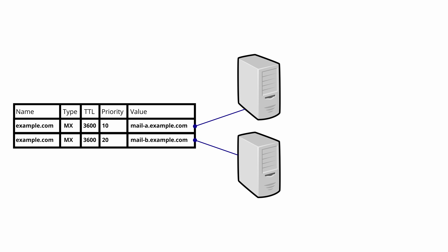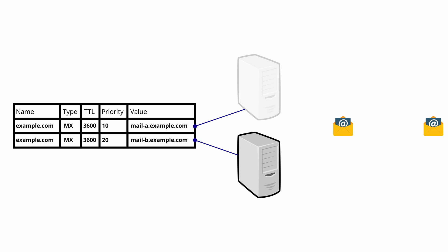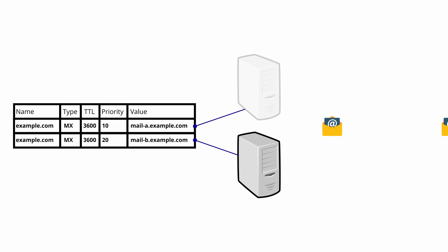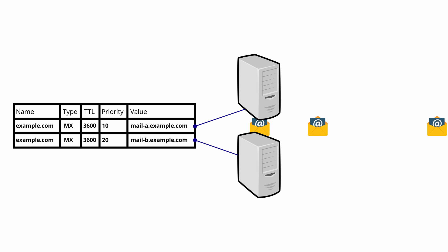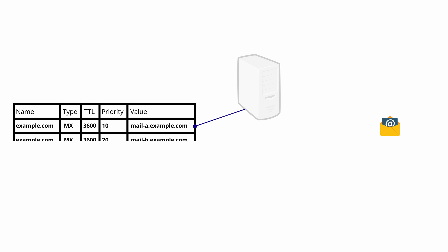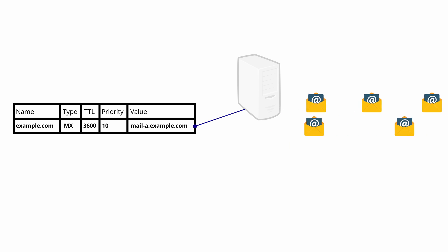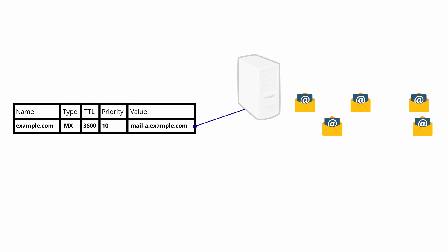When you have multiple priority values, the lowest priority server will be used. When this server is overwhelmed or goes offline, then the next highest priority server will be used. This backup configuration can either continue delivering mail if it has access to the mailboxes, or queue the mail until the primary server comes back online. Without this redundancy in place, the sending server can retry sending until the destination server comes back online, but this is not ideal and the message might never get delivered.